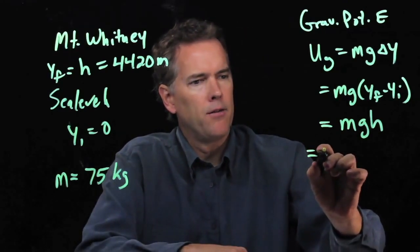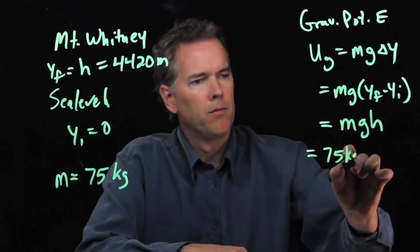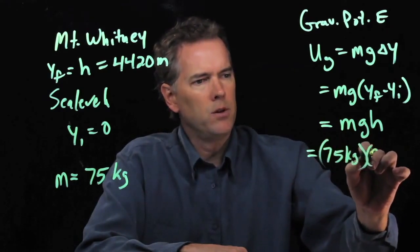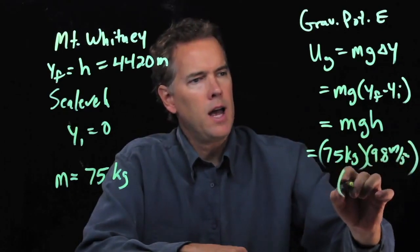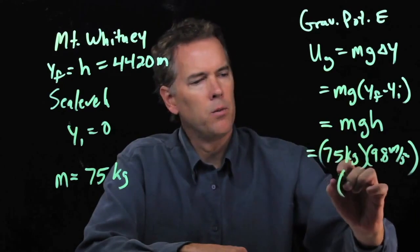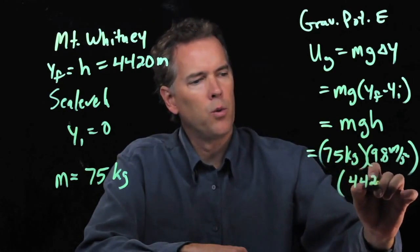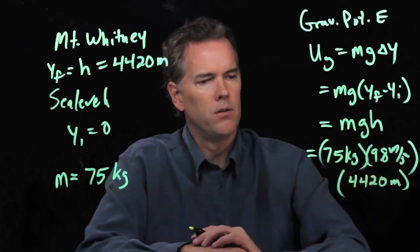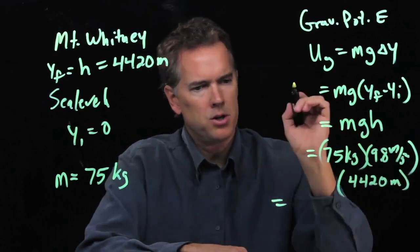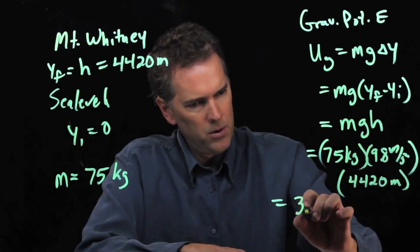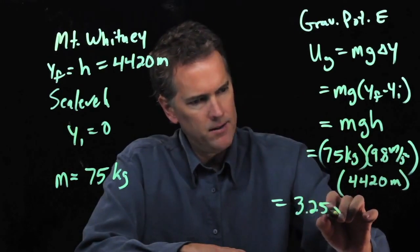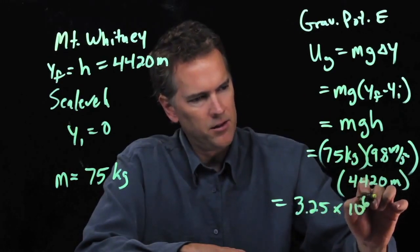Okay, so we have 75 kilograms. We have g which is 9.8 meters per second squared. And then we have h which we said was 4420 meters. And if you punch all those numbers into your calculator you should get 3.25 times 10 to the 6th.